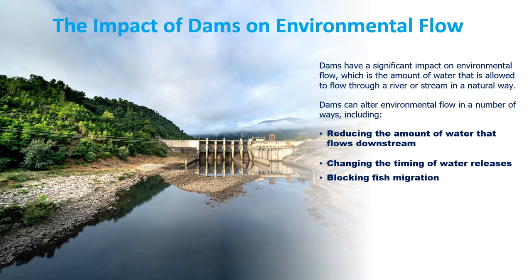One impact is decreasing fish populations. Fish populations need a certain amount of water to migrate, spawn, and find food. When the amount of water flowing downstream is reduced, fish populations can decline. Another impact is changing the distribution of sediments. Sediment is important for river ecosystems because it provides habitat for fish and other organisms.